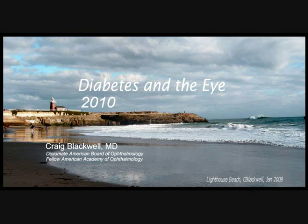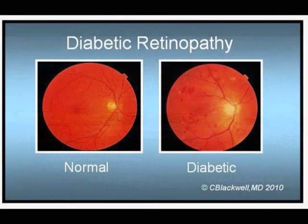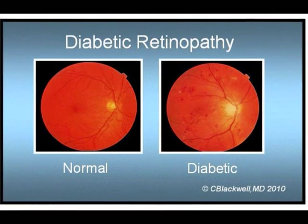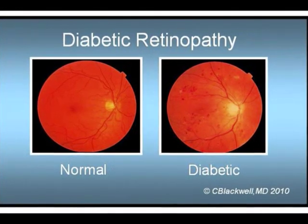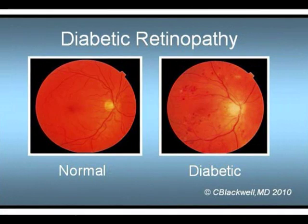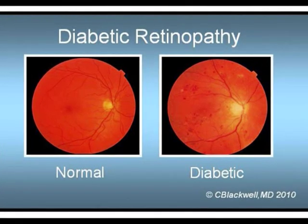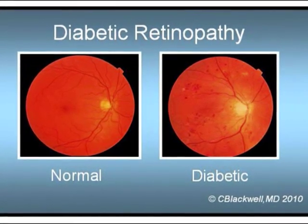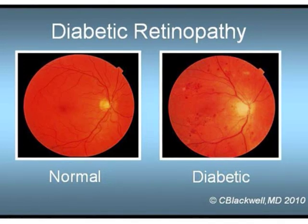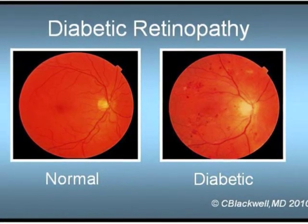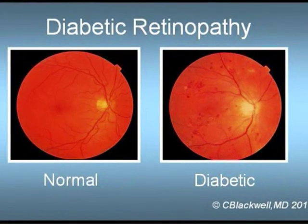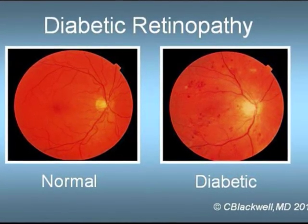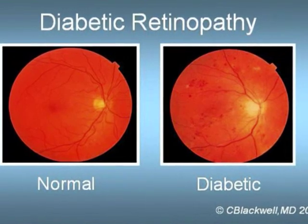This video is about diabetes and the eye. Here are pictures of two different retinas. On the left is a nice-looking normal retina. On the right is a retina showing significant signs of damage from diabetes. The obvious changes are the red spots, which are hemorrhages, but there's more going on, which we will talk about in this video.